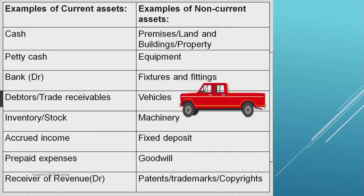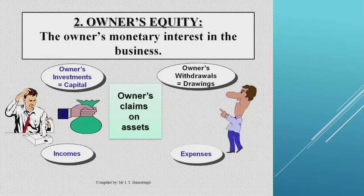Examples of non-current assets include goodwill, fixed deposits, patents, trademarks, copyrights, fixtures and fittings. You can see the full list on screen.